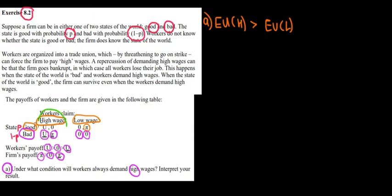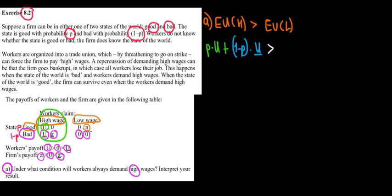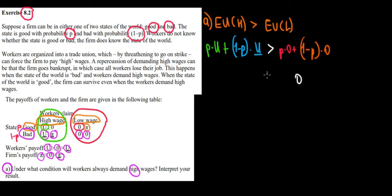For the expected utility of demanding a high wage, we work with the high-wage column. With probability P the utility is U, so that gives P times U. With the remaining probability 1 minus P, when the economy is bad, the utility is U-bar. For demanding a low wage — the second column — with probability P the utility is 0, and with probability 1 minus P the utility is also 0. So the expected utility of low wages is simply 0.